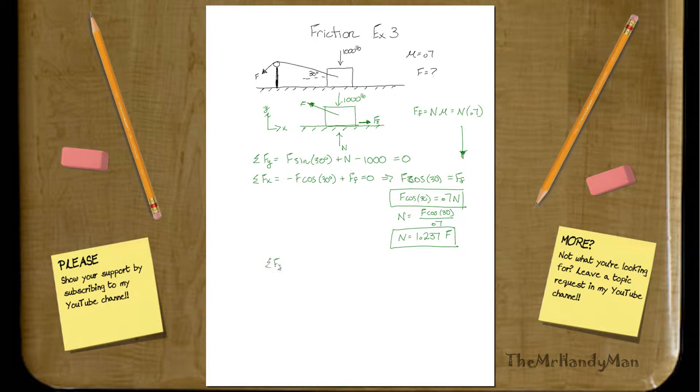If we go back and we look at the y equations, we have sigma f y is equal to f sine of 30 degrees, which, by the way, this is just 1 half. You should know your trig values now. Plus normal force, which is 1.237 times that force, minus 1,000 equals 0.